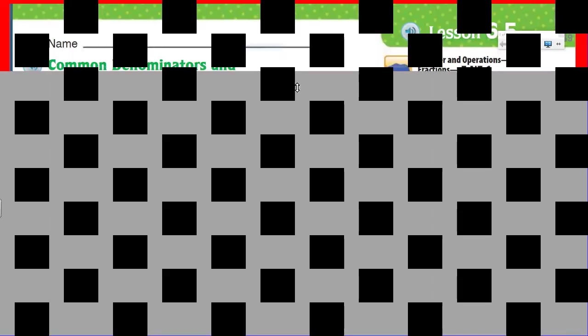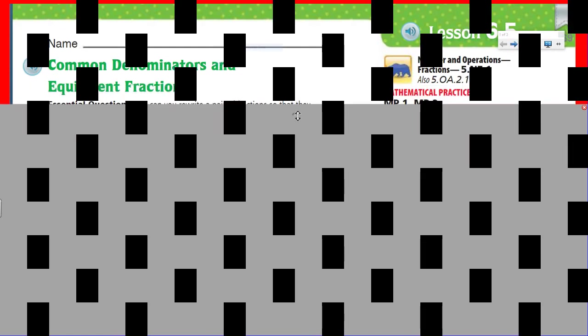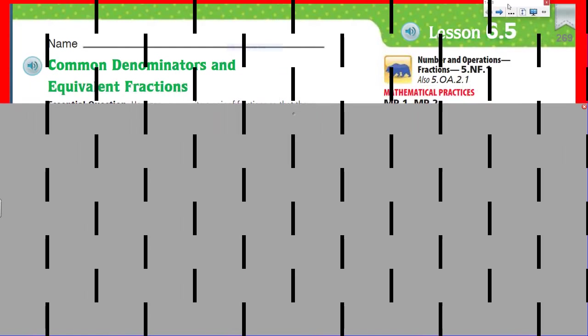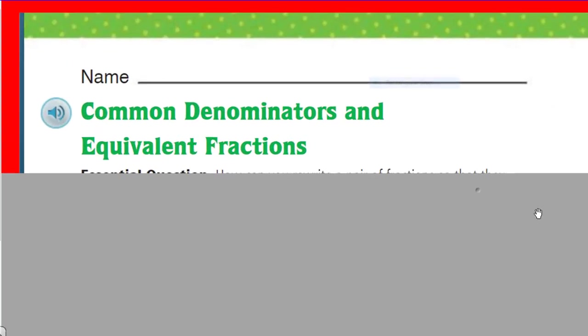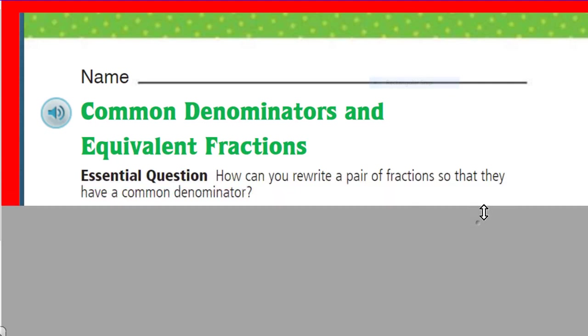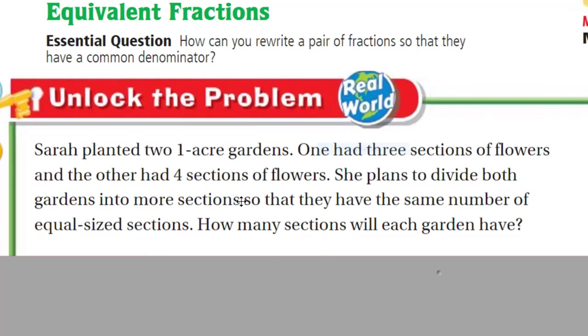And hello there Marvelous, Mr. Warner here, once again with another math video. We are going to be looking at a GoMath video, the GoMath program, lesson 6.5. We're going to be looking at common denominators and equivalent fractions. It's a very cool topic I must say. And we have our essential question: how can you rewrite a pair of fractions so that they have a common denominator? That's a question I have always had, and today I think we're going to come to a solution. It says unlock the problem, let's unlock it.